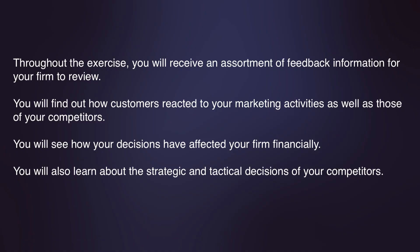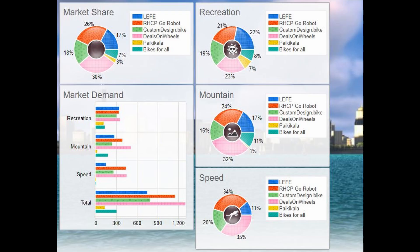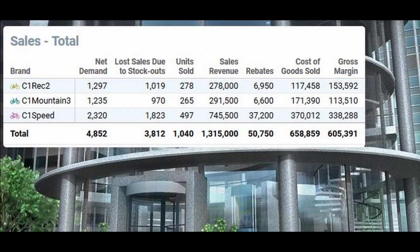Throughout the exercise, you will receive an assortment of feedback information for your firm to review. You will find out how customers reacted to your marketing activities as well as those of your competitors. You will see how your decisions have affected your firm financially. You will also learn about the strategic and tactical decisions of your competitors. You will receive detailed market demand and market share reports. You can review the information about your demand, revenues, and lost sales, broken out by brand. A similar report will help you analyze the brand profitability.